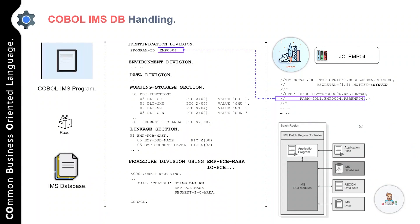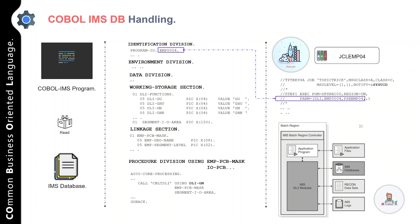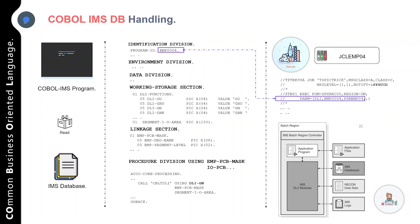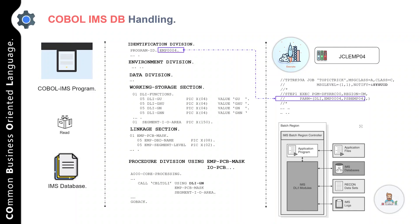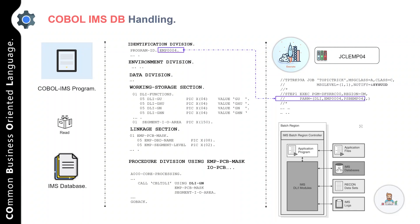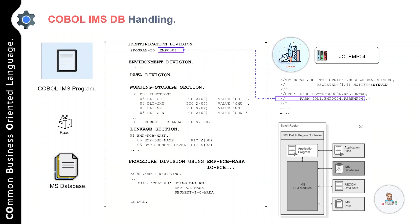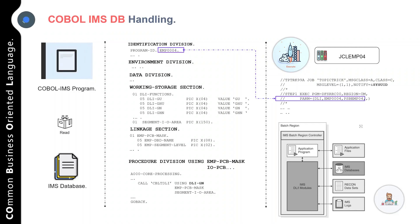In the JCL we have used the utility DFSRRC00. There are four parameters specified with the PARM option: the first is program type, where I've specified DLI; then the program name; then the PSB name; and finally the checkpoint ID — if you have a restart process you can specify a checkpoint ID, otherwise it can be left blank. This is how you design your COBOL program to interact with a file or a database depending on your business requirement.